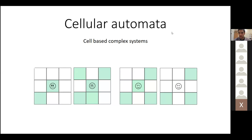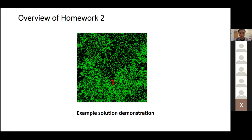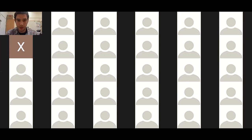This week we will have a look at cell-based complex systems that are also called cellular automata. They are basically simulations that are defined by rules that depend on the neighbors of each cell and their status. This is also related to the homework, so we can begin like last time with a demonstration of the homework. I'll open a running simulation and share my screen.